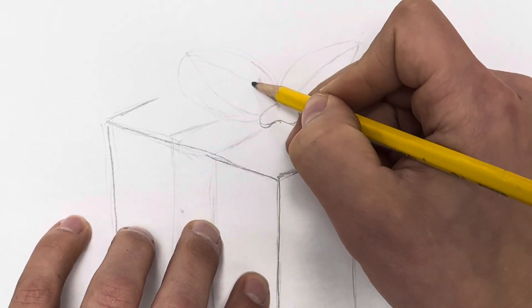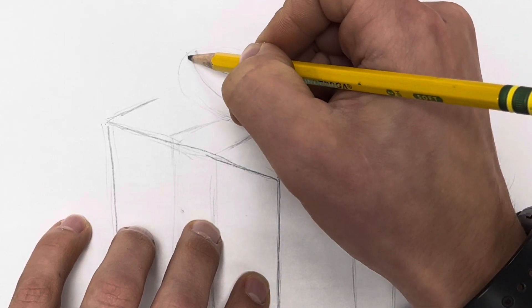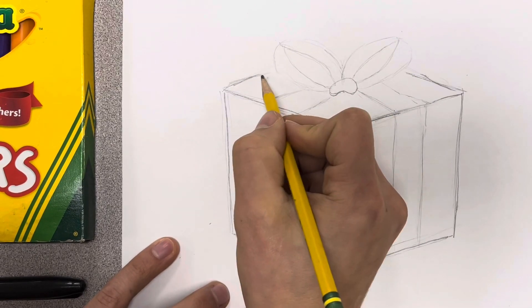Kind of put a point in the middle and then it curves down and really skinny, like a skinny football almost. Nice. We're looking good. We'll clean up some of those lines.